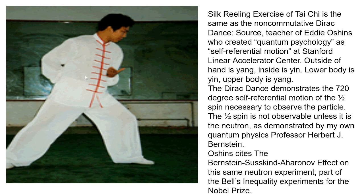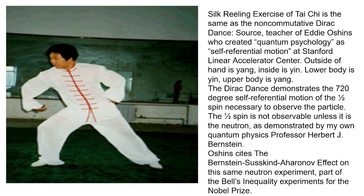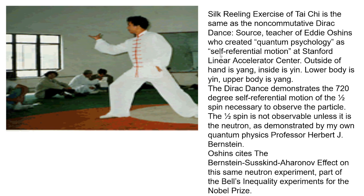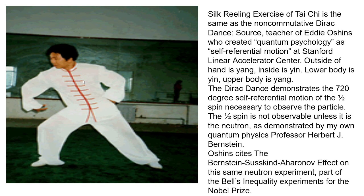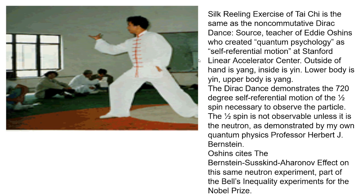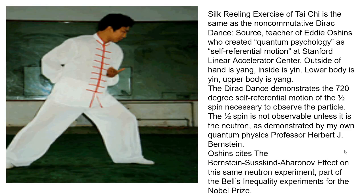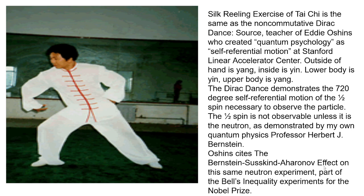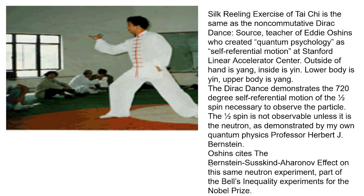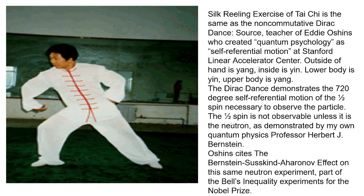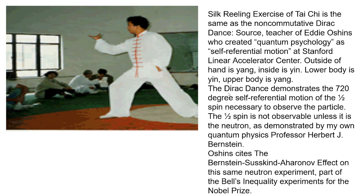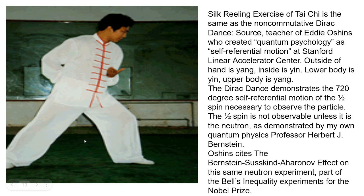This was discovered by Eddie Oshins when he worked at Stanford Linear Accelerator Center as a quantum physicist. He coined the phrase 'quantum psychology' and called it self-referential motion as the secret of the Dao. He also taught wing chun, and said the whole secret of internal martial arts as neigong is due to non-commutativity. He worked with math professor Lou Kaufman and referenced the Bernstein-Susskind-Aronov effect, named after Herbert J. Bernstein, who did the Bell inequality experiments demonstrating non-locality of the neutron via the one-half spin and 720-degree Dirac dance.